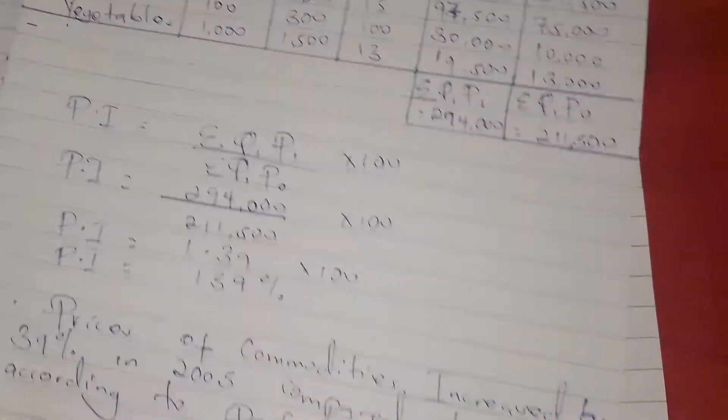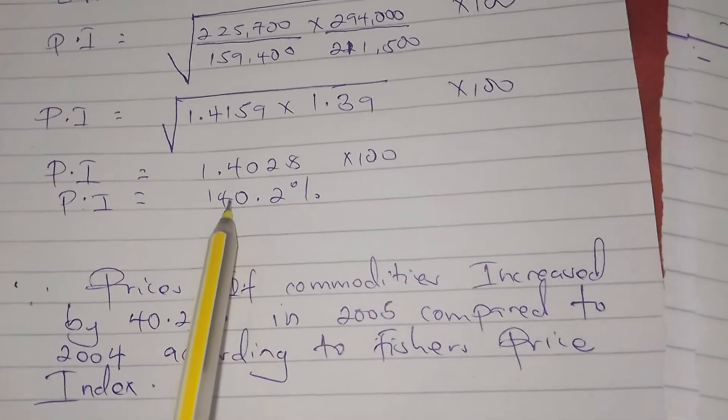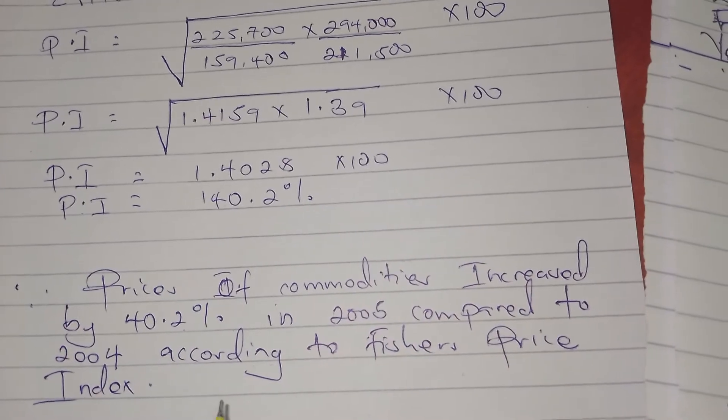While if we look at Fisher's, it is 140, so it is in between. So it reconciles the two, since we even use their formulas.